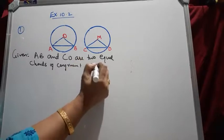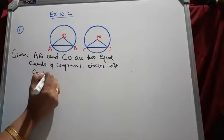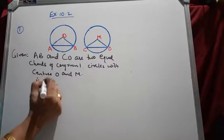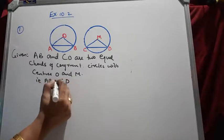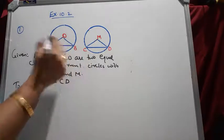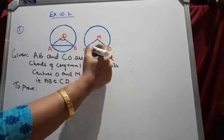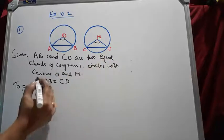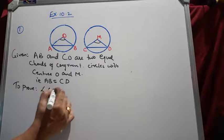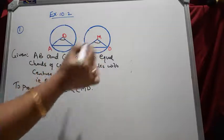Given: congruent circles with centers O and M, so we can write AB equal to CD. We are supposed to prove that these two chords subtend equal angles at the center. AB is the chord which subtends angle AOB at center O, and CD is the chord which subtends angle CMD at center M.